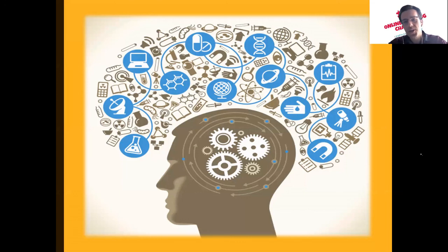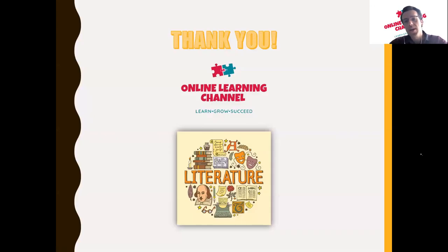That concludes today's presentation. We've focused on the novel section of English Home Language Paper 2, specifically the Life of Pi, looking at how to respond to an essay-based question and a contextual-based question — what one might face in the exam and what answers one could offer. Thank you for tuning in to the online learning channel. My name is Brad, and we will see you next time.